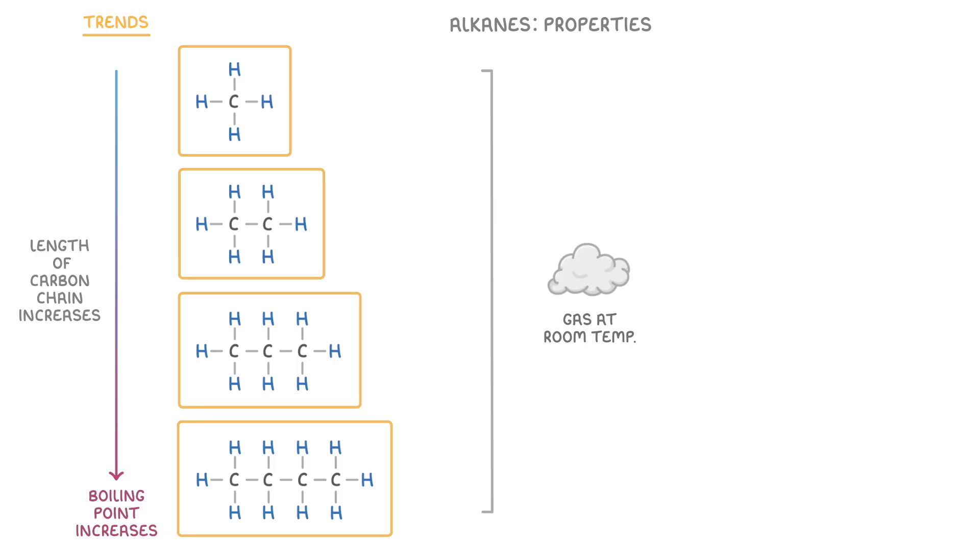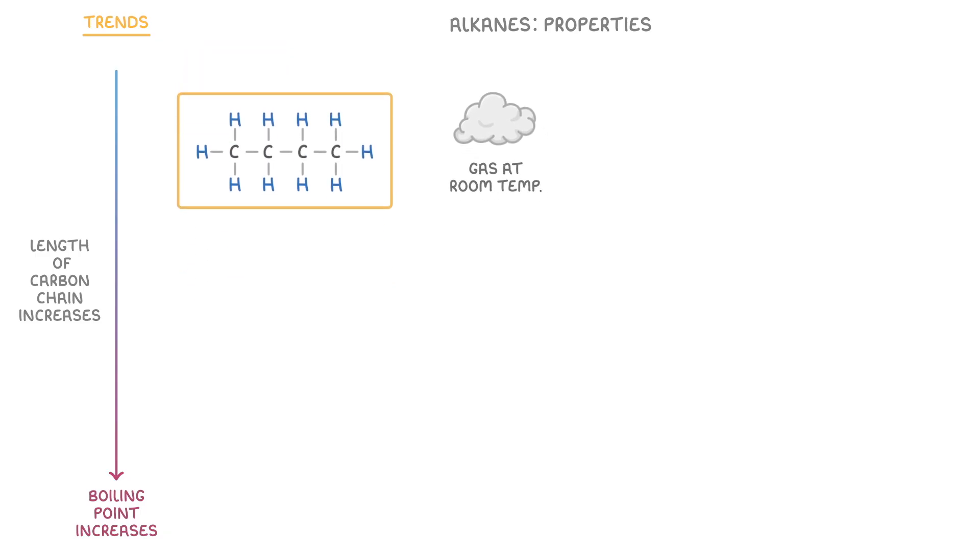To give us a bit more room, let's group these up at the top here, and label them as our shorter alkanes, so with one to four carbon atoms.